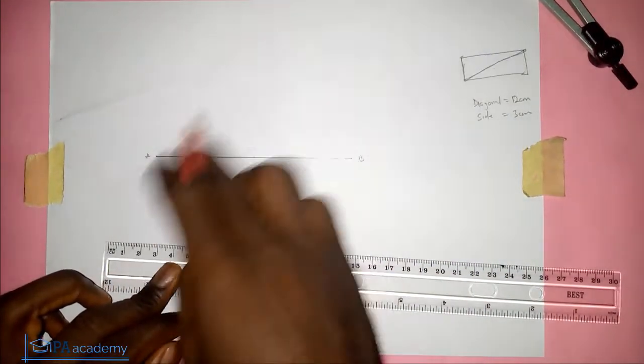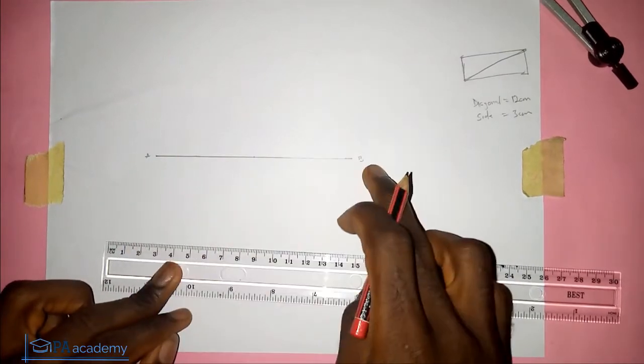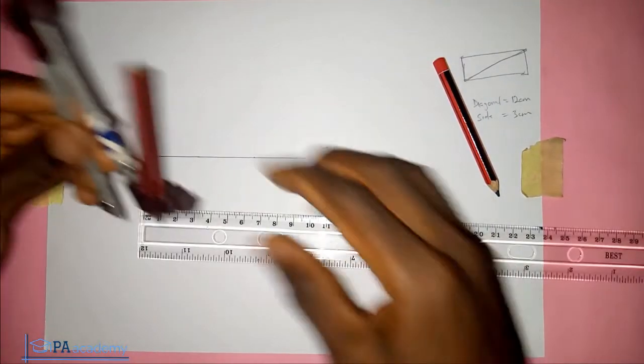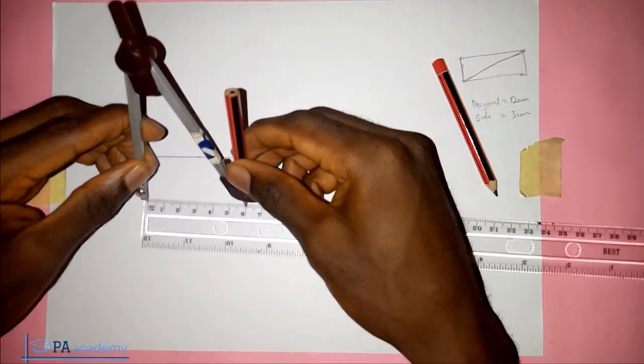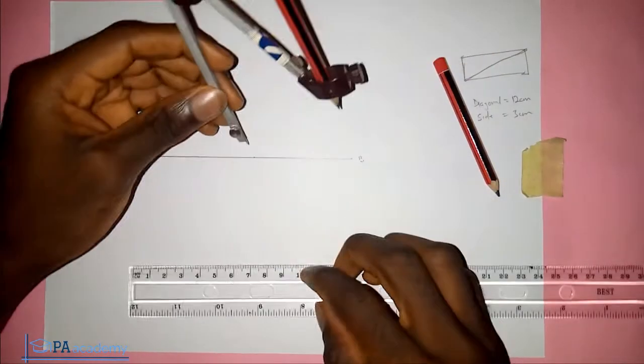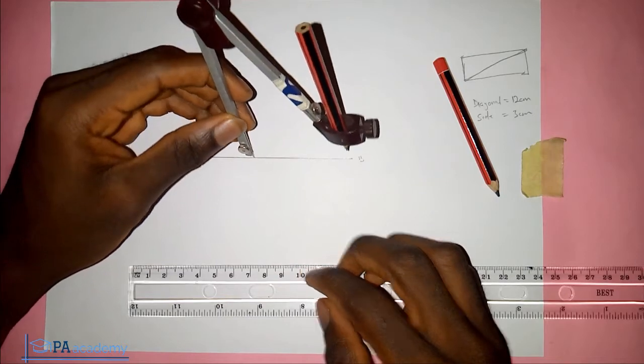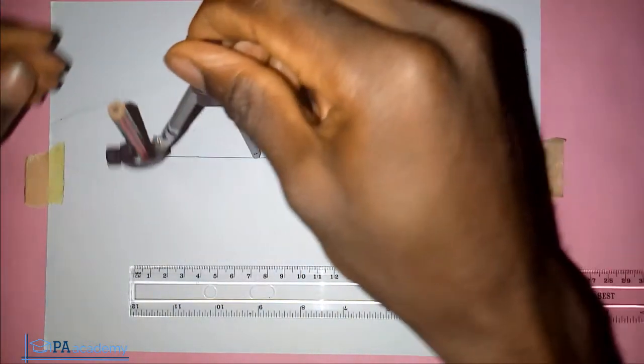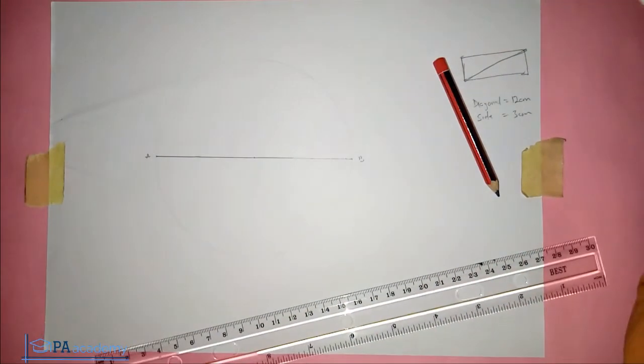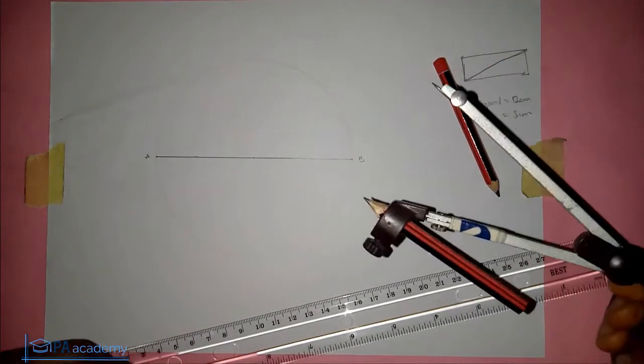So the next thing we are going to do is draw a circle around this diagonal. So if the length is 12 cm, that means the radius will be 6 cm. So we are going to draw a circle with radius of 6 cm. So now we are going to draw a circle with the radius of 6 cm around the diagonal.